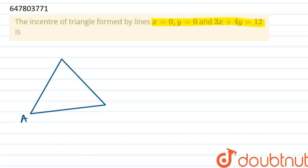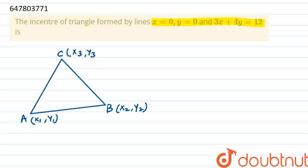We will be able to find the vertices A, B, and C. Suppose this is (x1, y1), this is (x2, y2), and this is (x3, y3). So this is the length of side a, this is the length of side AB, and this is the length of side AC.